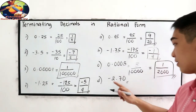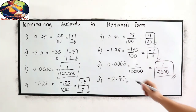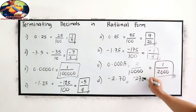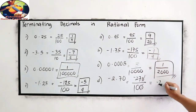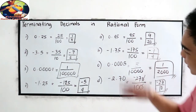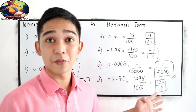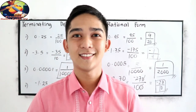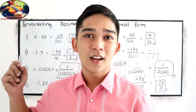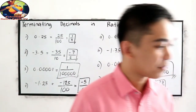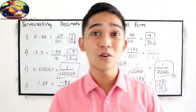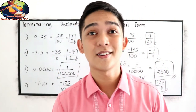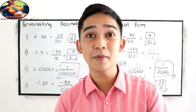Our last number: negative 2.70. This is negative 270 over 2 decimal places — so 270 over 100. We can cancel the trailing zero, giving us negative 27 over 10. That is our rational form. Thank you for watching Senior Pablo TV — don't forget to subscribe. Next, we will proceed to non-terminating and non-repeating decimals, so kindly watch our next video.